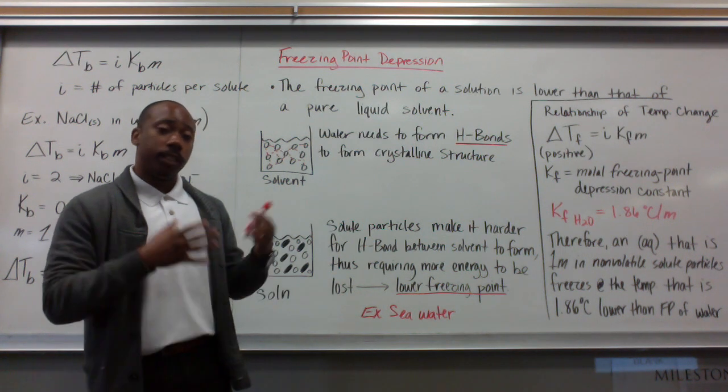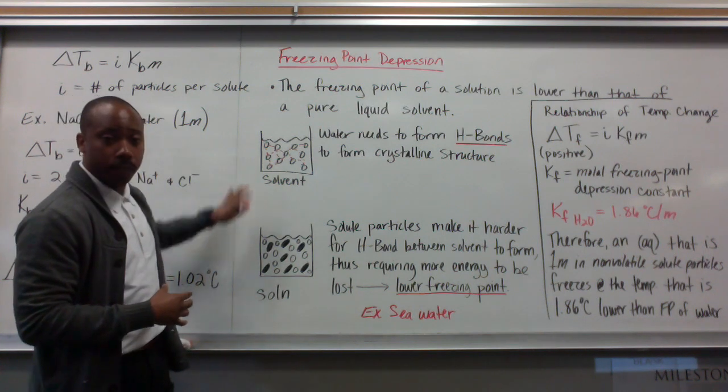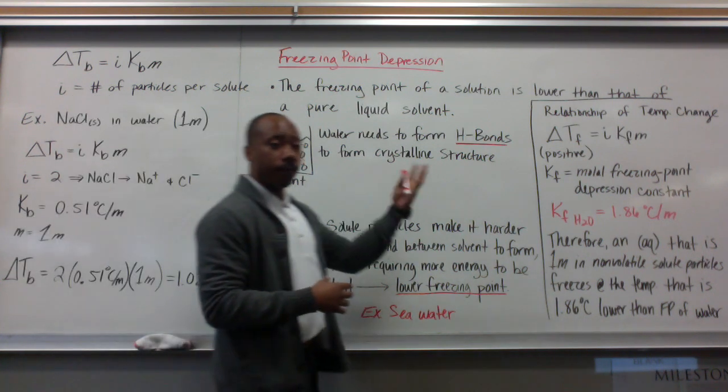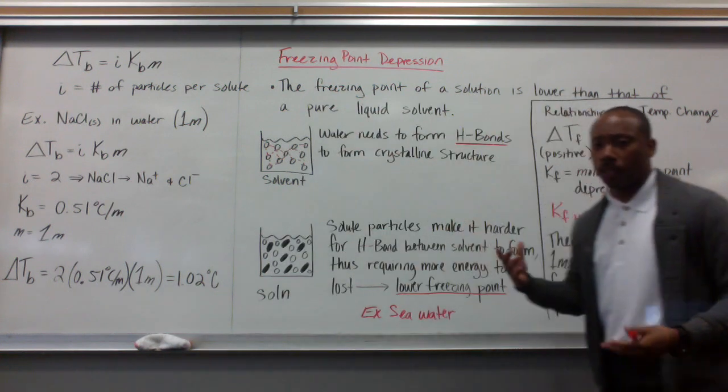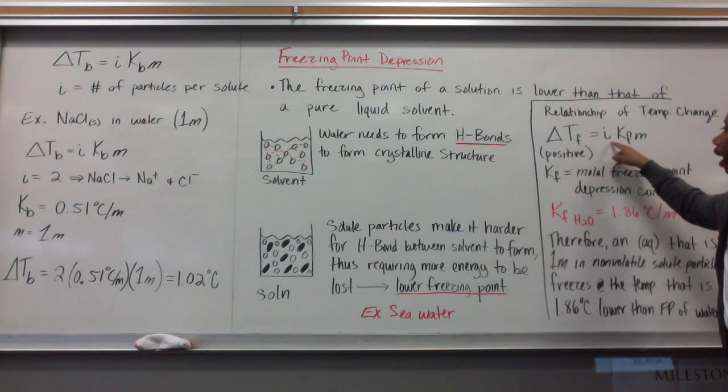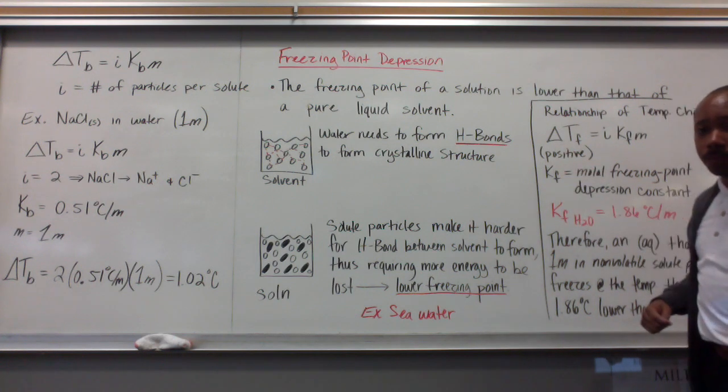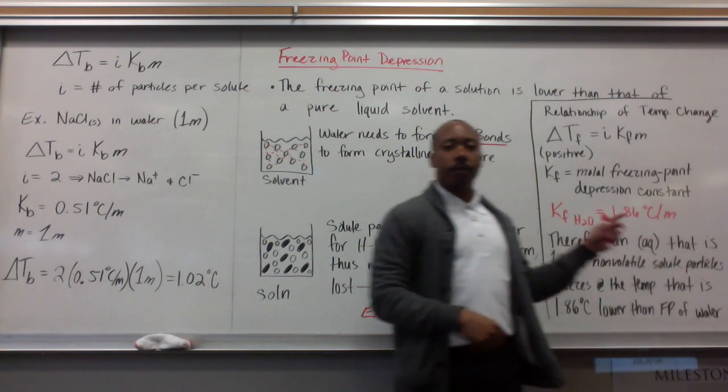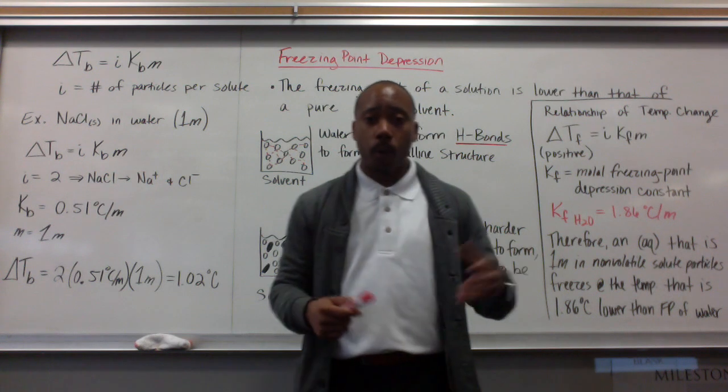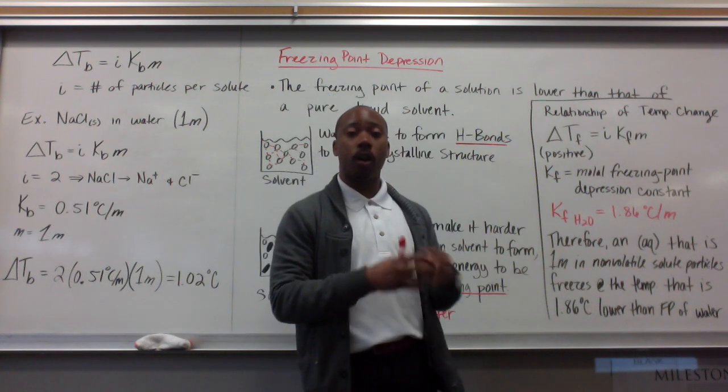Now, the relationship between the temperature change between your solvent, the freezing point of your solvent, and the freezing point of your solution can be defined just as boiling point elevation with a slightly different chemical formula. Delta T sub F is equal to i times K sub F times the molality. Again, your change in temperature is going to be a positive value. So, K sub F is the molal freezing point depression constant. It's a constant that will be given to you, and it's still based on the solvent.